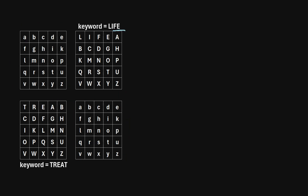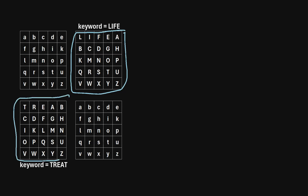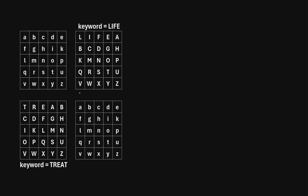The squares in the top right corner and the bottom left corner contain uppercase letters of the alphabet A through Z, in which each letter only appears once, and we build these squares using keywords.